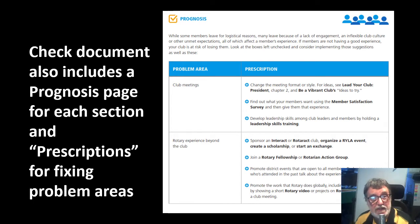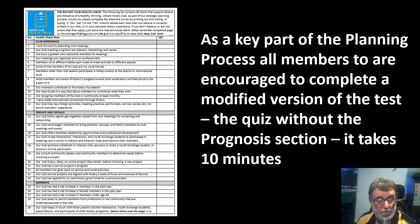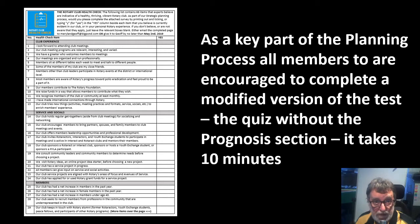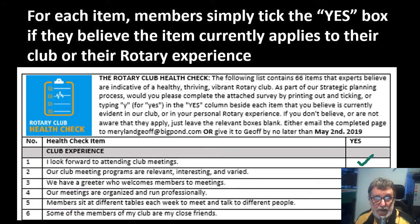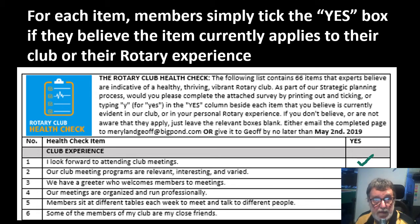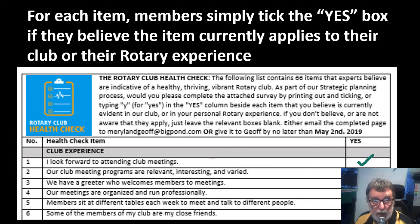If you're interested, the quiz has a built-in prognosis page for each section and prescriptions for fixing problem areas. You don't have to use that, but it's available. At Miraburra we produced a modified version of the test without the prognosis section, and the modified test is available in the downloads. Members simply had to tick the yes box if they thought the characteristic shown is currently evident in their club. The test only took members about 10 minutes to complete, and asking them to do it at the plan initialisation meeting meant we had a high rate of completion. Members not in attendance could complete the survey on a computer and email it in.